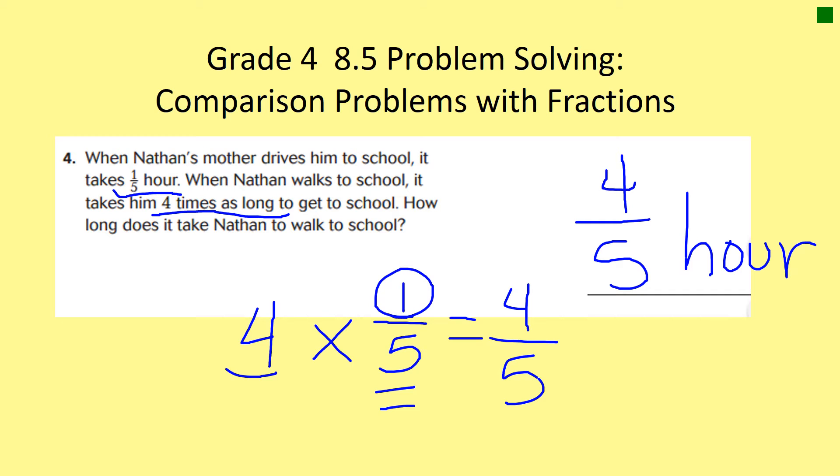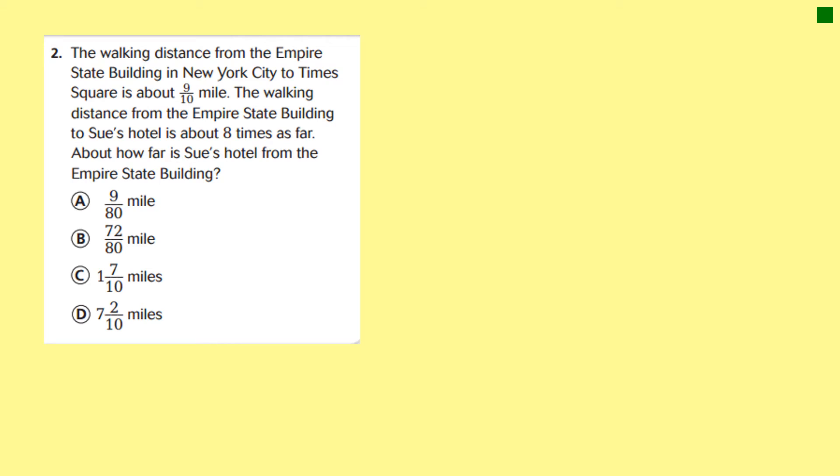Let's see what's on the back. All right, this is number two on the back. The walking distance from the Empire State Building in New York City to Times Square is about nine-tenths mile. The walking distance from the Empire State Building to Sue's Hotel is about eight times as far. About how far is Sue's Hotel from the Empire State Building? Those are famous places in New York, right, and sometimes it's easier to walk places in New York.